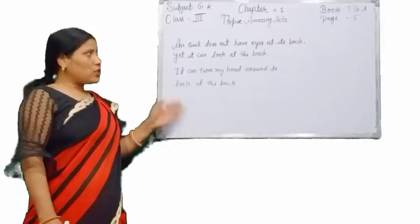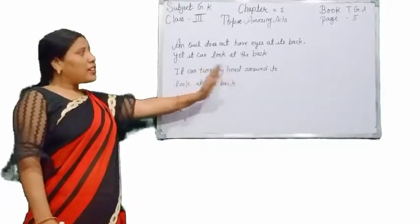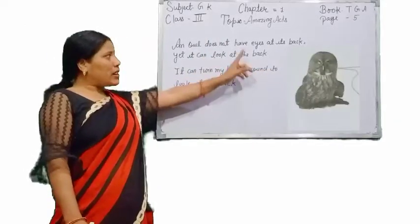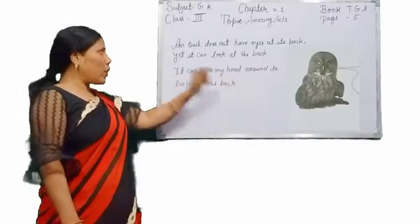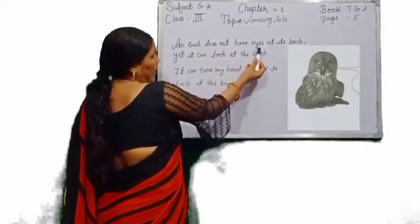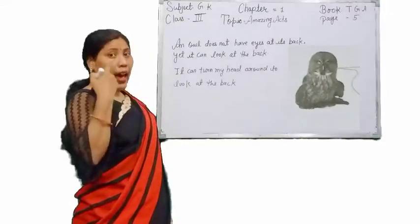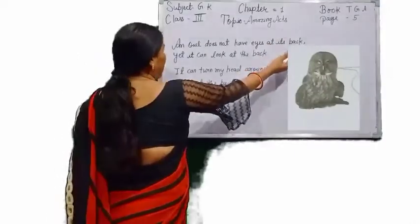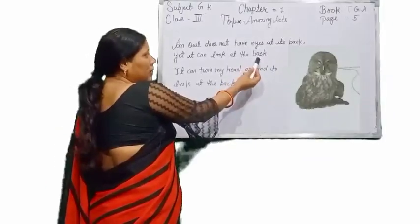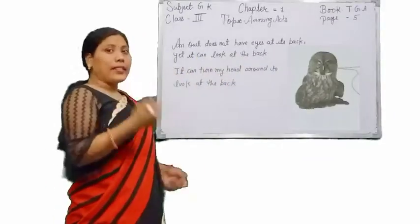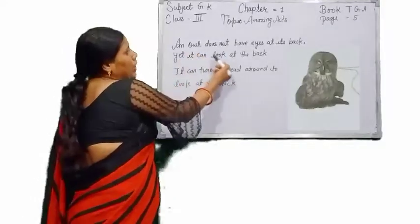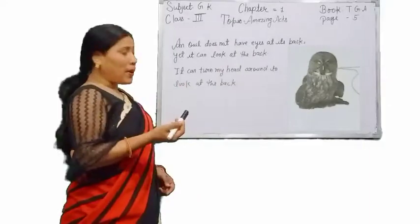Okay students, what do you see here? Yes, you see the picture of an owl. We will describe its characteristics. An owl doesn't have eyes at its back, yet it can look at the back. How does it happen?